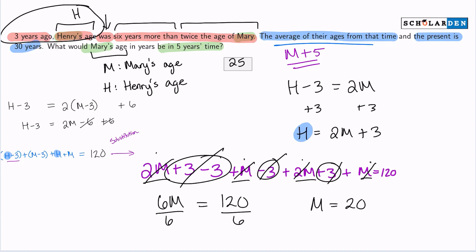So remember, we're looking for Mary's age in five years' time. We received Mary's age by itself. Now let's just add five. So in five years, Mary will be 25 years old. Just like that. And that's how we get that answer.